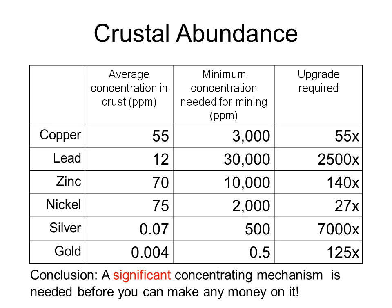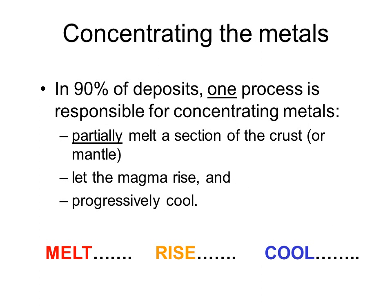The conclusion is that nature must provide a significant concentrating mechanism before we can make any money on it. It's interesting to note that rare metals such as gold don't necessarily require more upgrading than more commonplace metals such as lead in order to reach economic levels. In 90% of deposits, one single process is responsible for concentrating the metals: partially melt a section of the crust or mantle — you'll see shortly why partial melting is important — let the magma rise through the crust, and progressively cool that magma to allow certain minerals to be concentrated at various stages of the cooling process. So: melt, rise, and cool — and we'll look at each of these processes in turn.